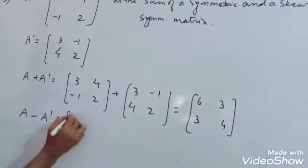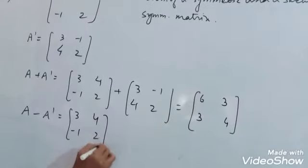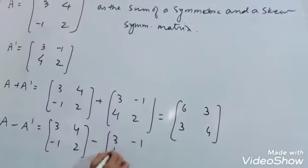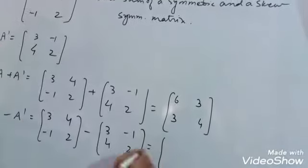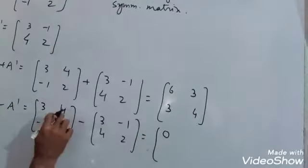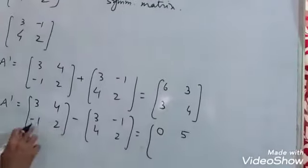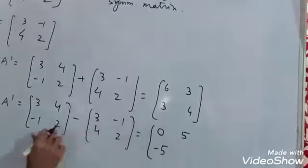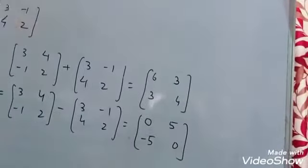A minus A transpose: [3, 4; -1, 2] minus [3, -1; 4, 2]. This gives us [0, 5; -5, 0].